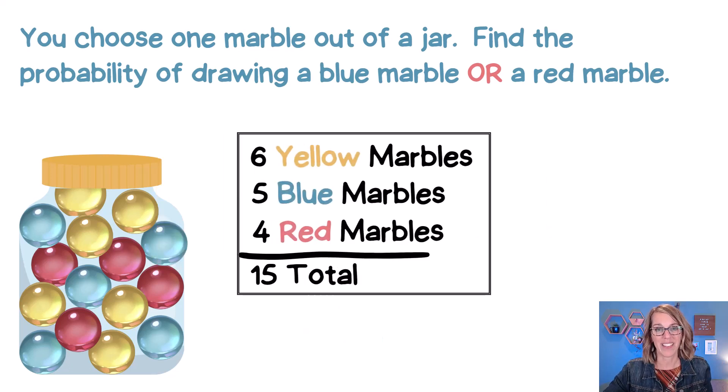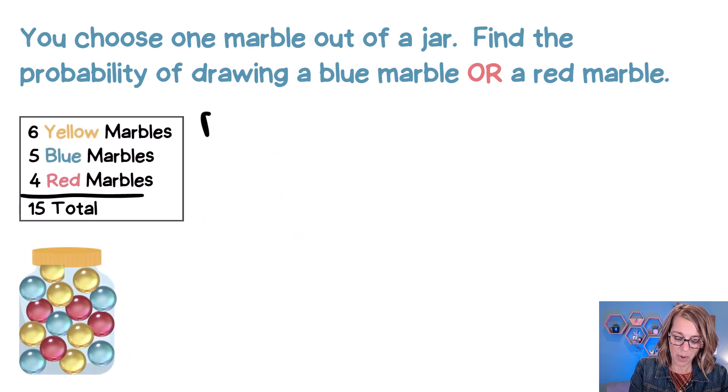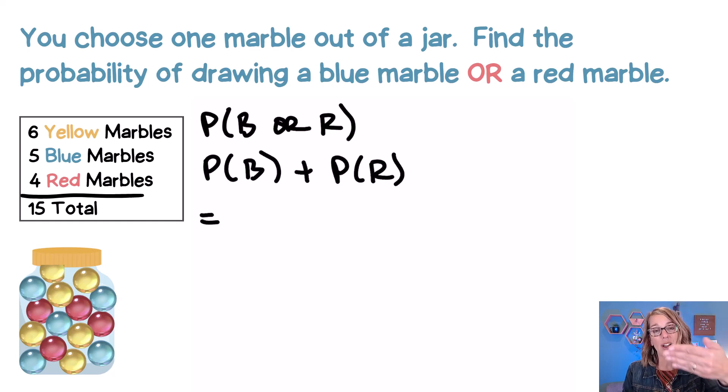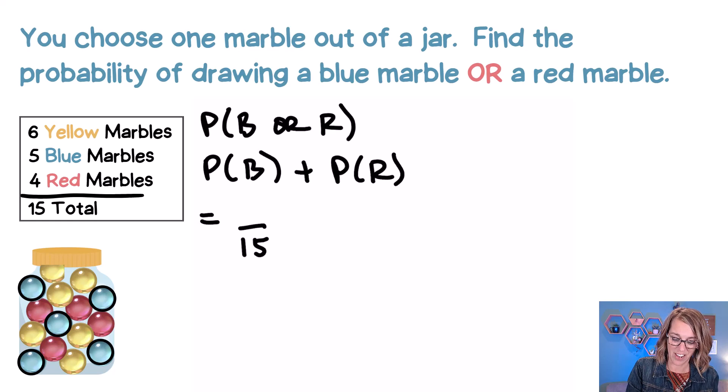We want to dive in and do the math here. We've got six yellow, five blue, four red for a total of 15. So as I do the probability, it's going to be blue or red and I know that I want to add those two probabilities together, the probability of blue plus the probability of red. So this is equal to, now I'm using favorable outcomes in the numerator out of total outcomes in the denominator. So when I go for that blue probability, there are 15 marbles total and there are five blue marbles in that jar.